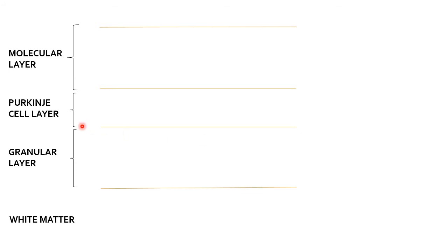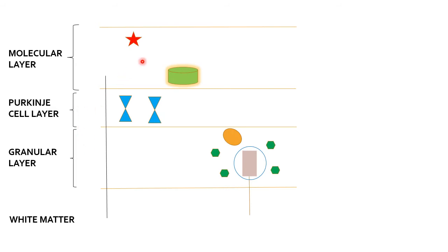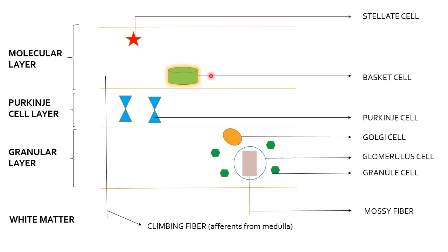The molecular layer, Purkinje cell layer, and granular layer are all visible, with white matter below. Each layer contains specific cells. The molecular layer has stellate cells and basket cells. The Purkinje cell layer contains Purkinje cells. The granular layer has Golgi cells, glomeruli, and granule cells. There are two important fiber types: climbing fibers from the medulla, and mossy fibers — named because they resemble plant moss.